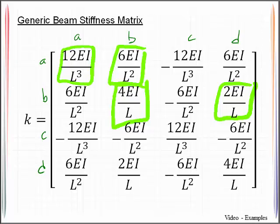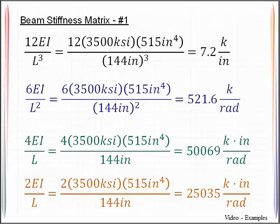All other elements in that matrix just repeat those quantities, sometimes with opposite signs. For the beam stiffness matrix for member 1, these would be the terms for those values. Please note the units on these.